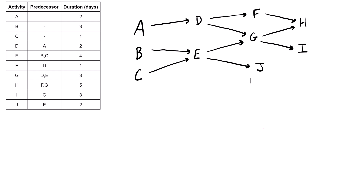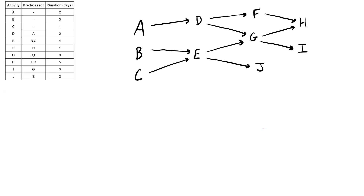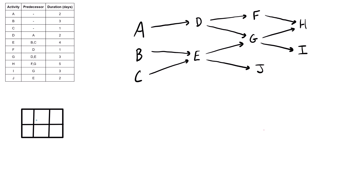Before we draw our good copy, let's resize and drop in our template. The convention we'll use: the activity name goes in the top middle, duration in the bottom middle, early start in the top left, early finish in the top right, late start in the bottom left, and late finish in the bottom right.